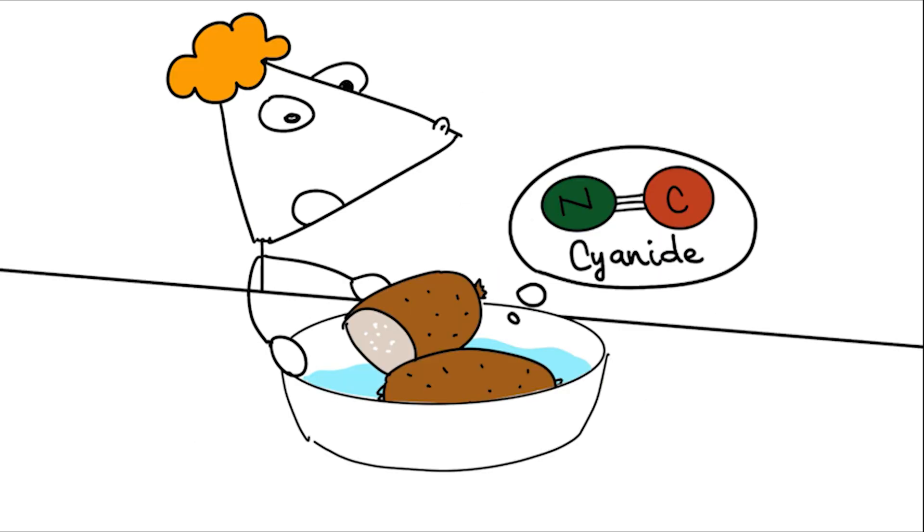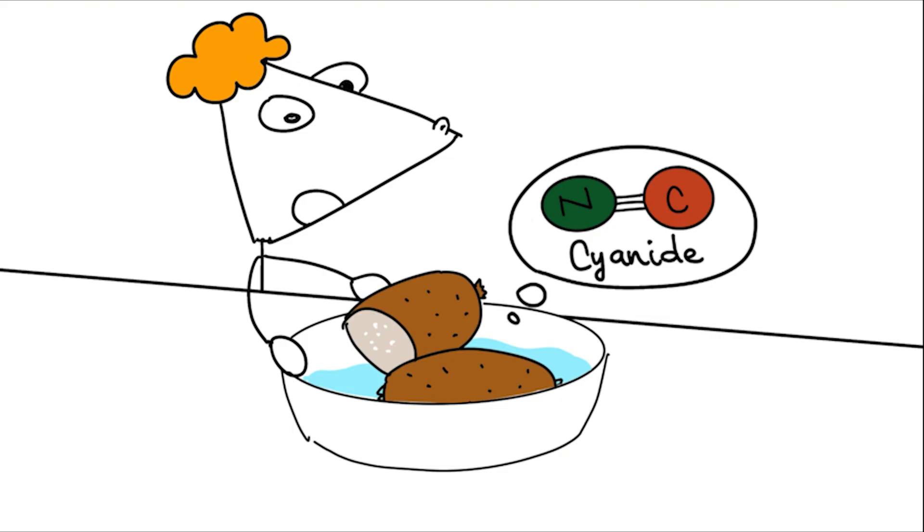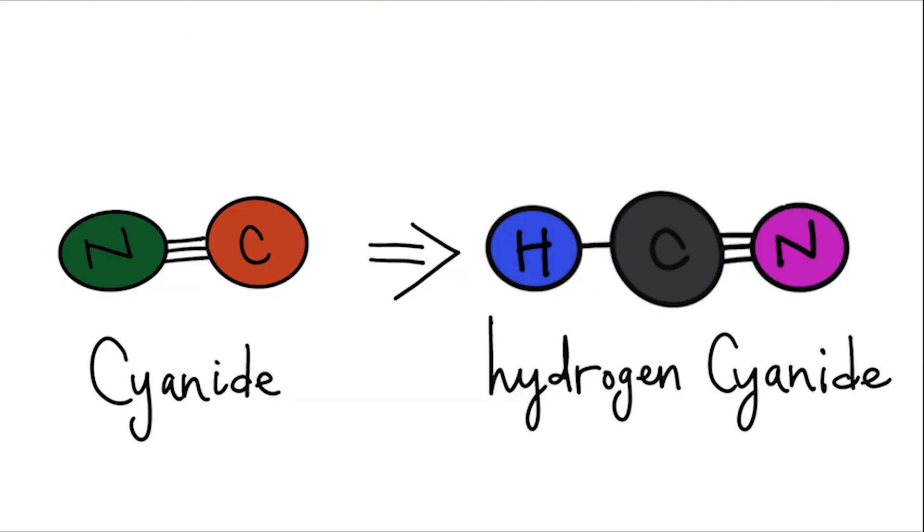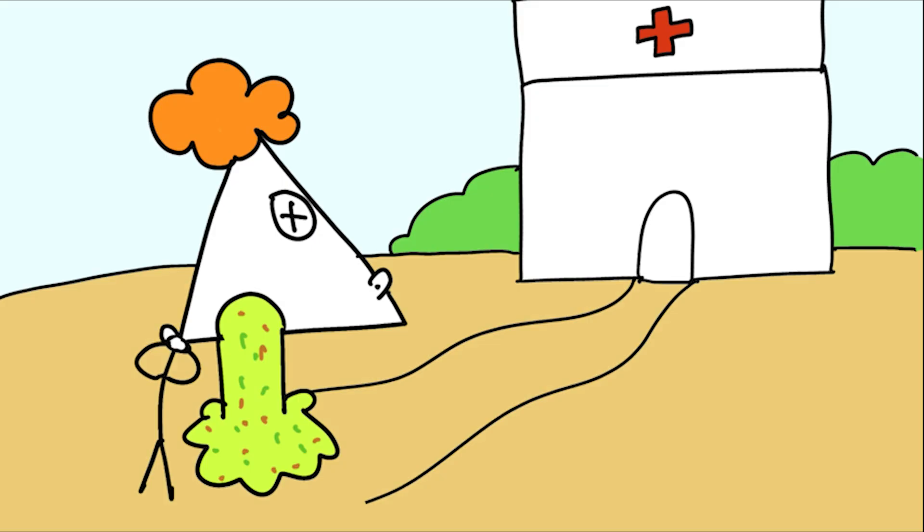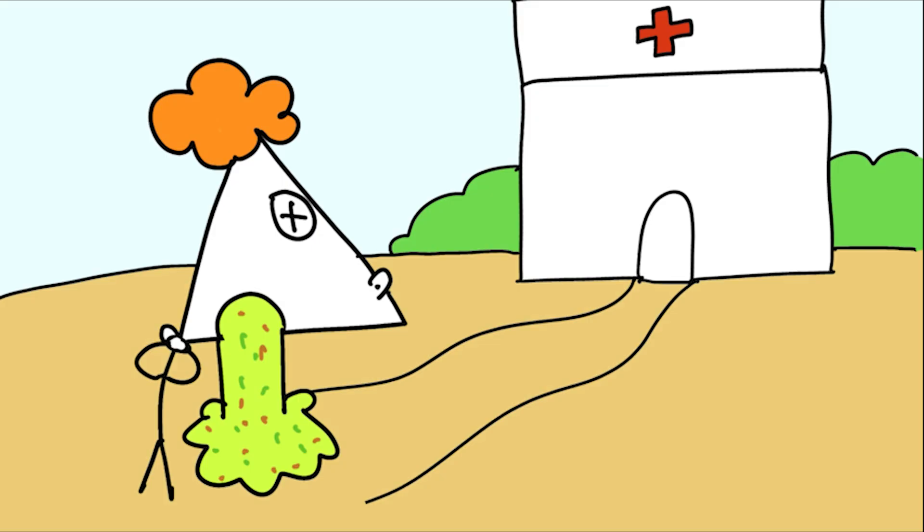If not processed correctly, cassava can release cyanide and cause poisoning. The compounds in cassava convert to hydrogen cyanide when the root is crushed. Just one poorly cooked cassava root can land you in the hospital. Symptoms include nausea, dizziness, rapid breathing, and even fainting.